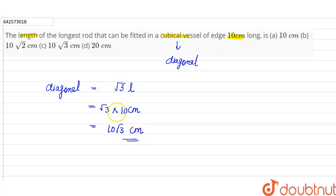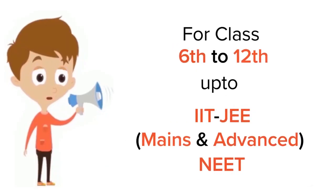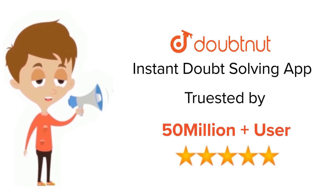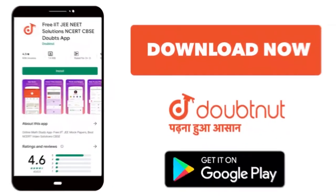So the length of the longest rod that can be fitted in the cubical box is 10 root 3 centimeter. For class 6 to 12, IIT-JEE and NEET level, trusted by more than 5 crore students, download Doubtnet app today.